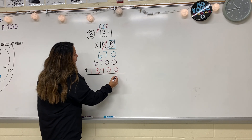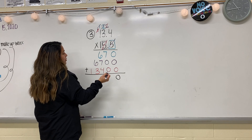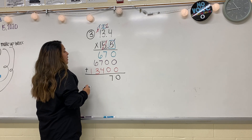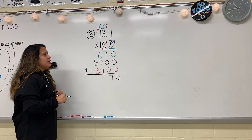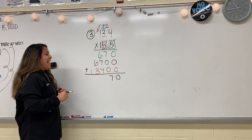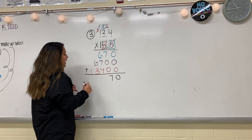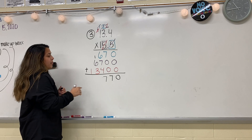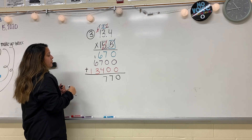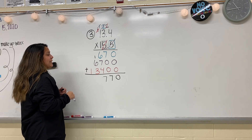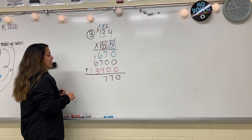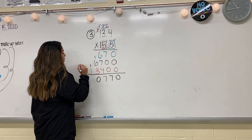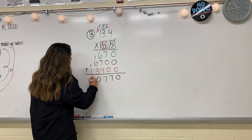Zero plus zero plus zero is zero. Seven plus zero plus zero is seven. Six plus seven is 13. 13 plus four is 17 — put my seven, carry my one. One plus six is seven. Seven plus three is ten — put my zero, carry my one. And then one plus one is two.